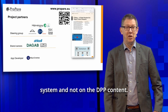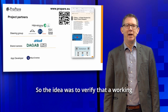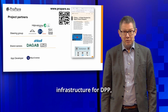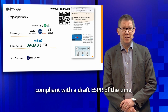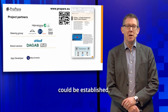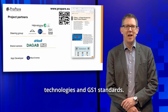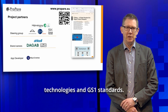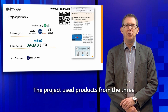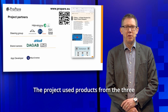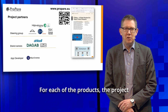The focus of this project was on the DPP system and not on the DPP content. The idea was to verify that a working infrastructure for DPP, compliant with the draft ESPR of the time, could be established built on existing web technologies and GS1 standards. The project used products from three brand owners.